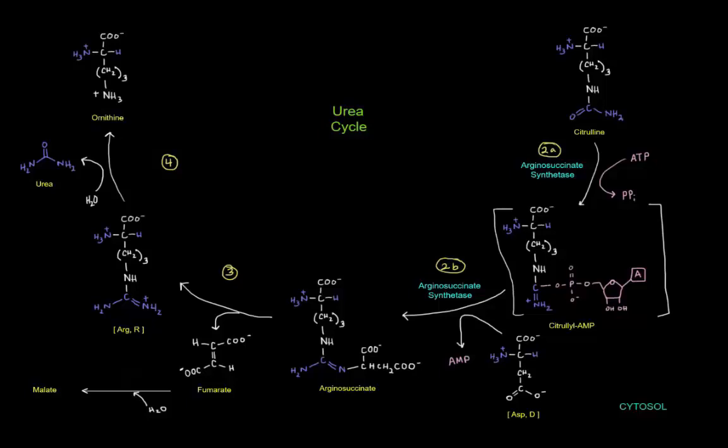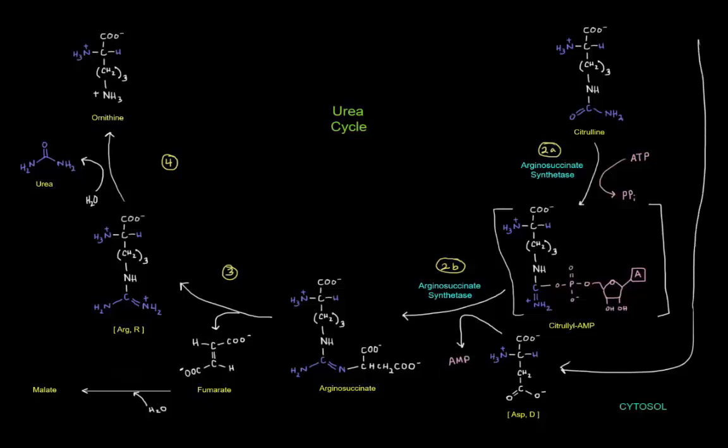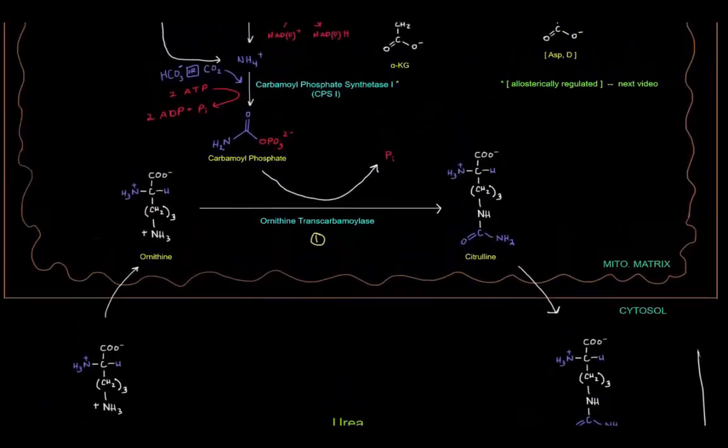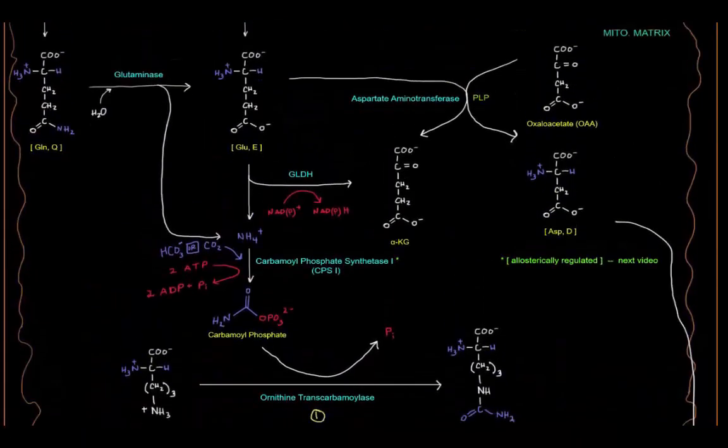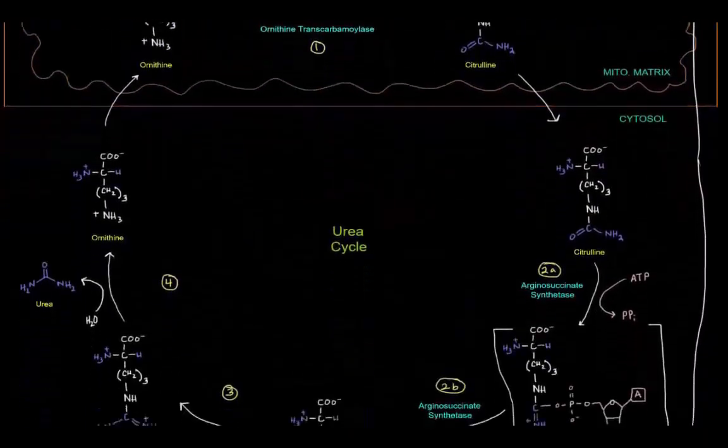Which is going to join, is going to have aspartate. The citrulline AMP is activated such that aspartate can come in and basically take the spot of this AMP portion. Okay, so where did this aspartate come from specifically? Well, it came from the aspartate that we created back in the mitochondrial matrix up here. Right there via that transamination reaction. That aspartate is going to come out into the cytosol to be a part of this reaction.